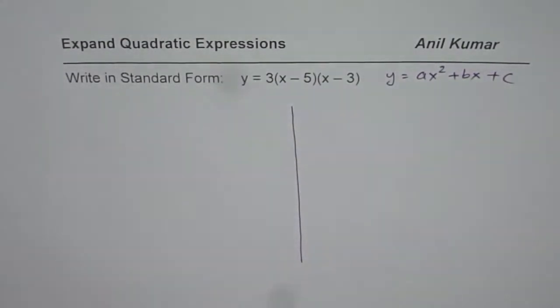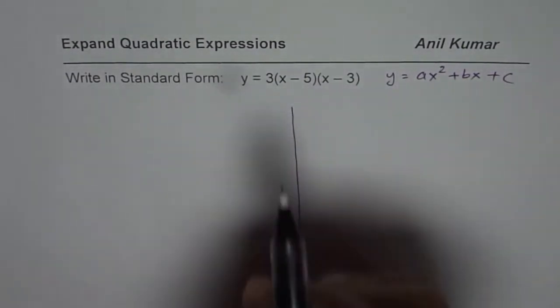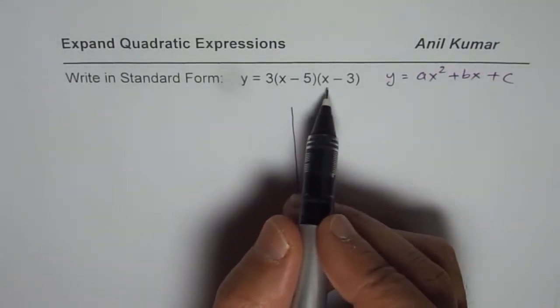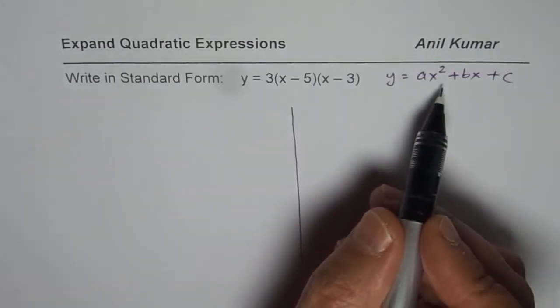I will show you two ways of doing it. Now basically we have to multiply, expand them, applying distributed property. That is how you can get into standard form.